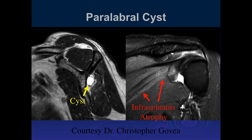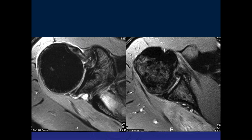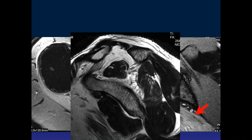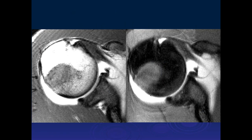This is a paralabral cyst with neurologic changes from impaction of the nerve, and that's important because if you see the nerve changes here, that may be an indication to decompress the cyst. Sahar, what do you think of this case? We have two coronal views — there's increased signal within the superior labrum with multiple paralabral cysts, and there is increased signal in the infraspinatus. So there is neuropathy of the infraspinatus, mass effect on the suprascapular nerve from the paralabral cysts, and you can see the atrophy on this side.